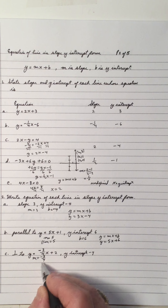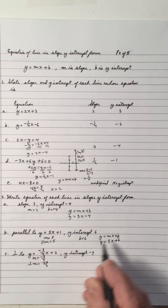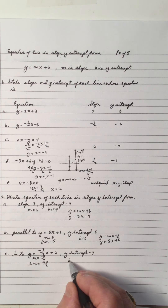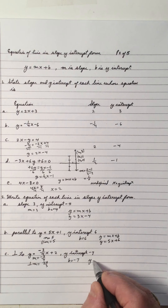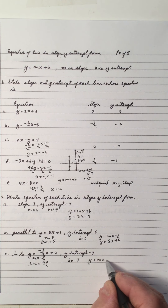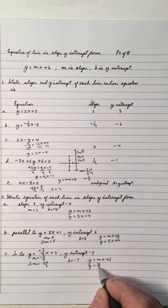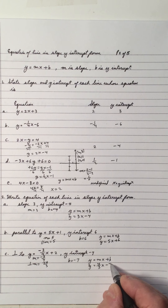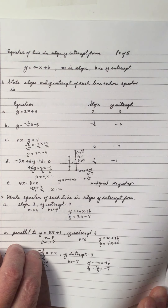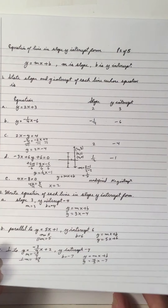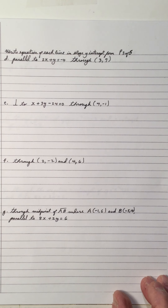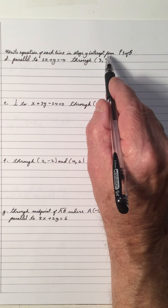For a line perpendicular to one with slope negative three-quarters, the perpendicular slope is the negative reciprocal, which is positive four-thirds. With y-intercept b equal to negative 7, the equation is y equals four-thirds x minus 7. You need to know parallel and perpendicular lines and how to find y-intercepts.